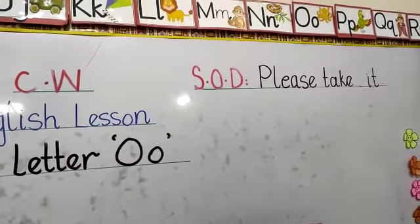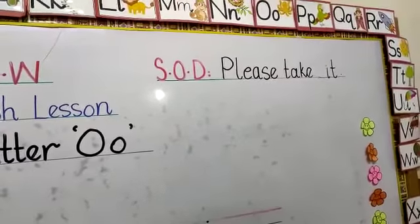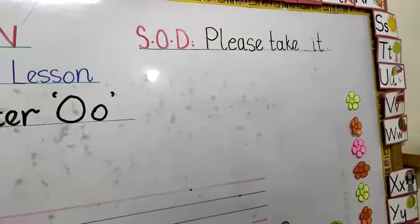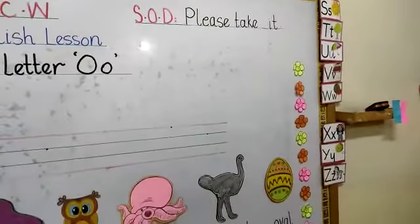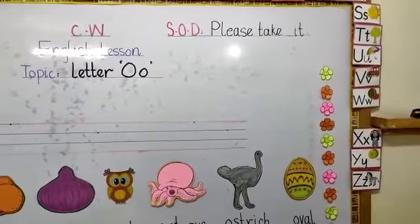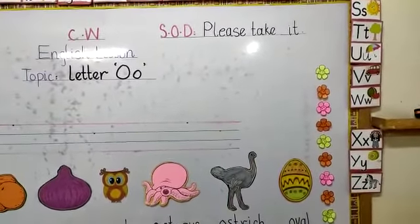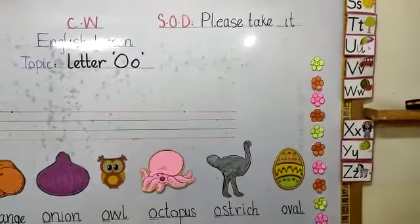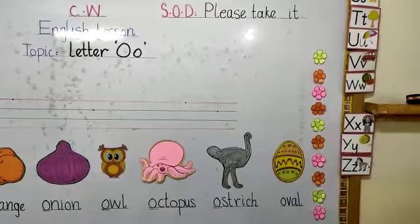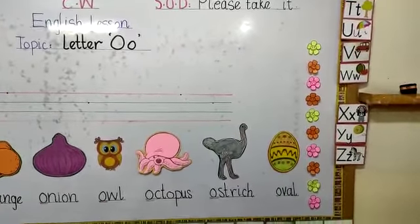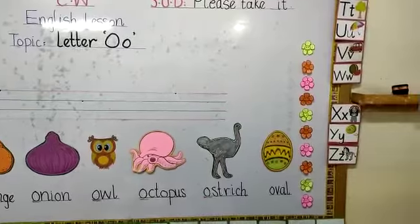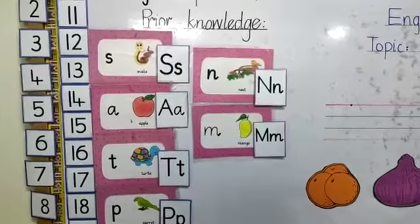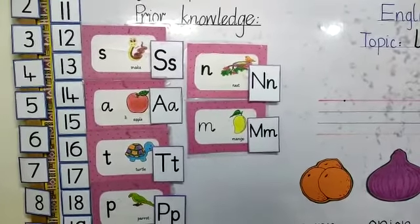N-Nest, O-Octopus, P-Parrot, Q-Queen, R-Rocket, S-Sun, T-Tree, U-Umbrella, V-Van, W-Watermelon, X-Xylophone, Y-Yak, and Z-Zebra. Yes, that's great, well done. So students, once again, now we are starting the lesson.